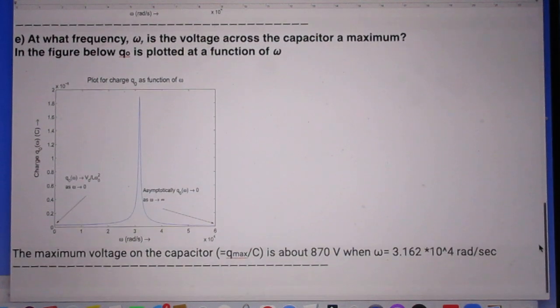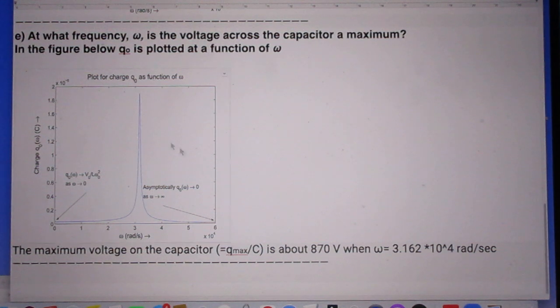At what frequency omega is the voltage across the capacitor a maximum? Turns out it's the same frequency. I plot here below the figure of the value of q zero as a function of omega. The maximum voltage on the capacitor which is the maximum value of q divided by C is about 870 volts when omega is again 3.16 times 10⁴ radians per second. You can read here estimate roughly the q maximum and you know the capacitance 10 to the minus 8 farads and so that gives you immediately that the voltage over the capacitor the maximum voltage is then 870 volts.